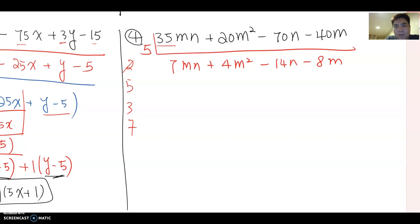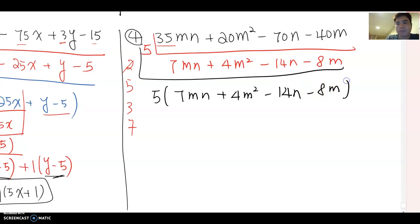I don't think so. So far now the factoring becomes 5 times 7mn plus 4m² minus 14n minus 8m.